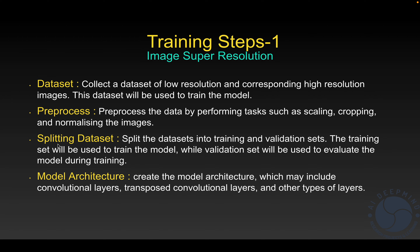The fourth step is defining the model architecture. We create the module — whether it's a GAN module, a residual module, or a deep convolution module. We have to define the architecture for the model in this step.